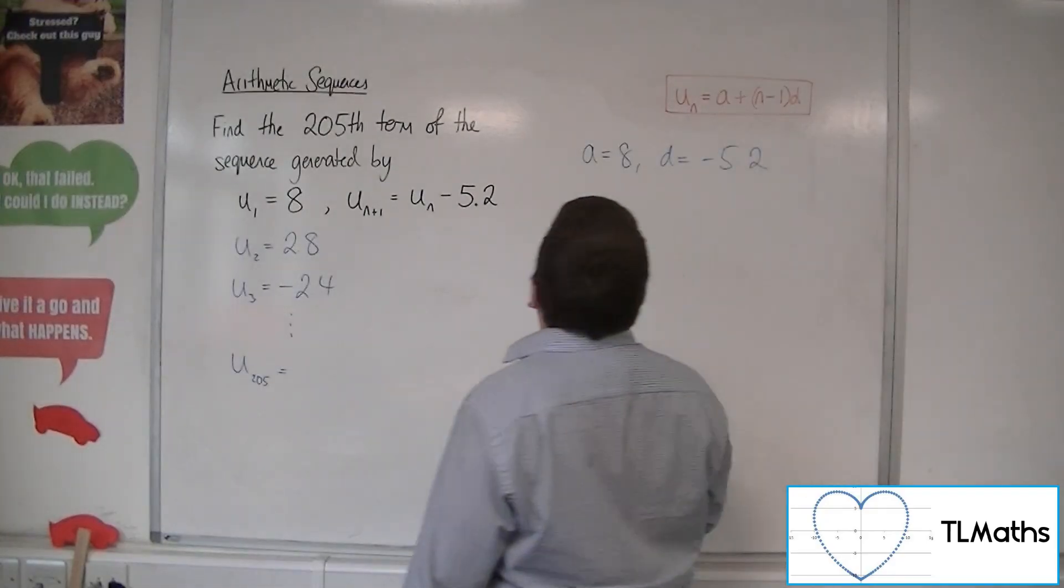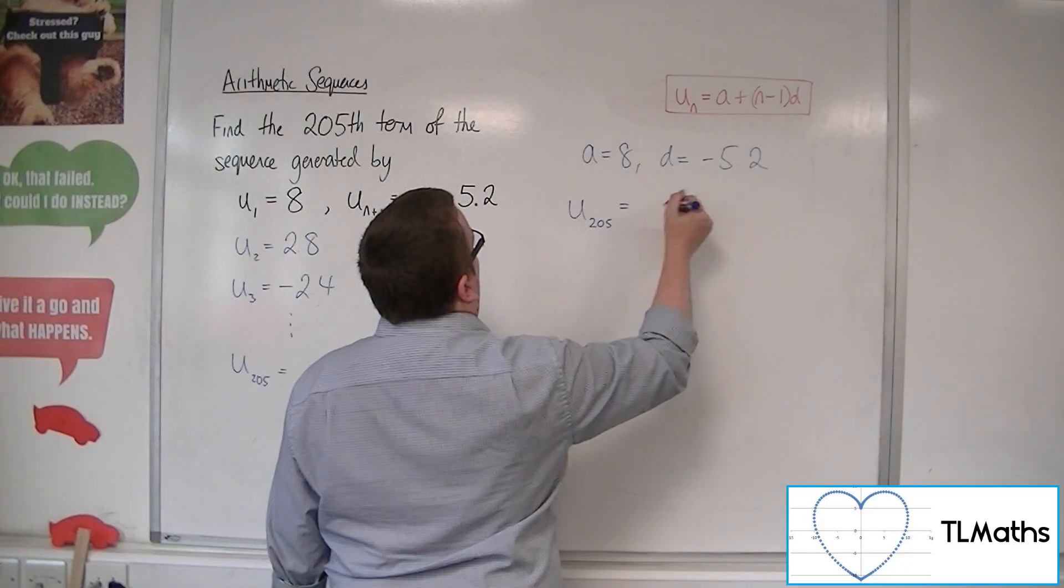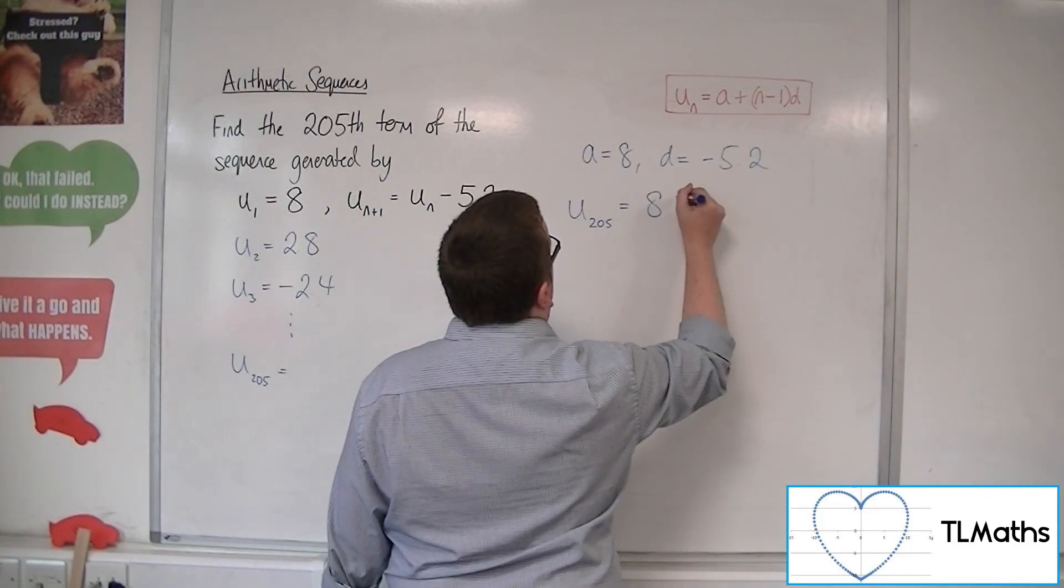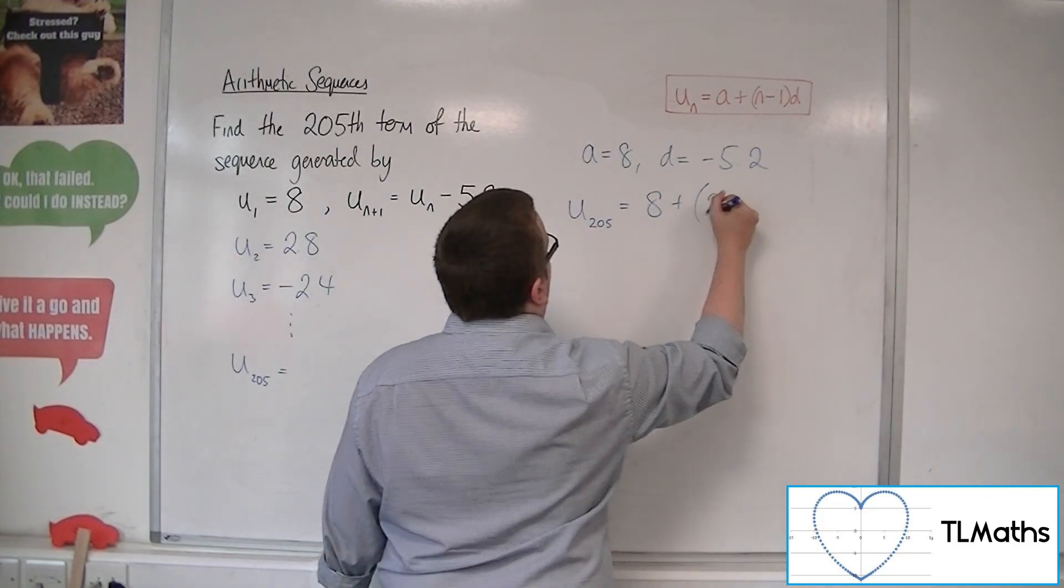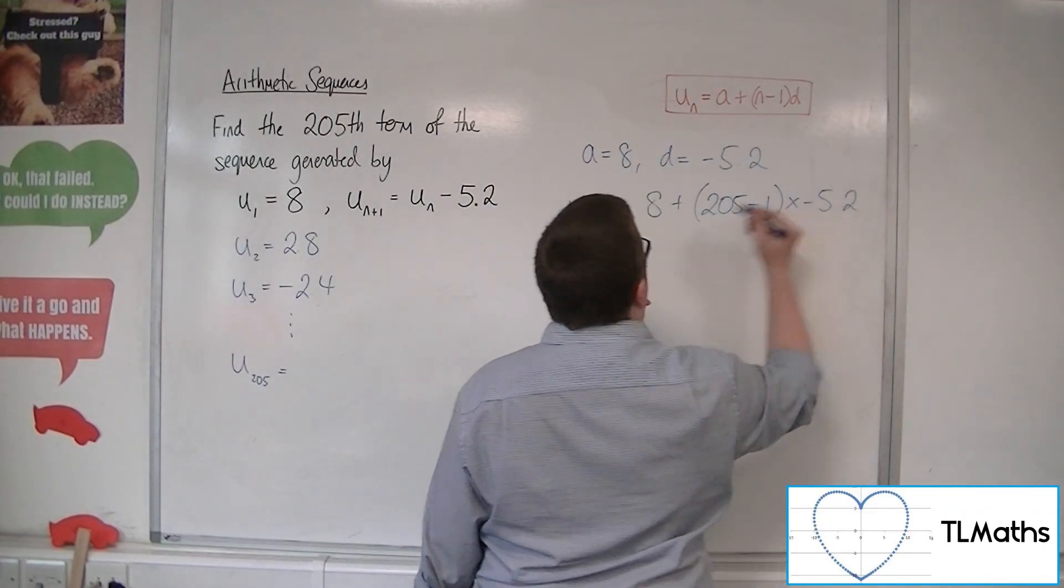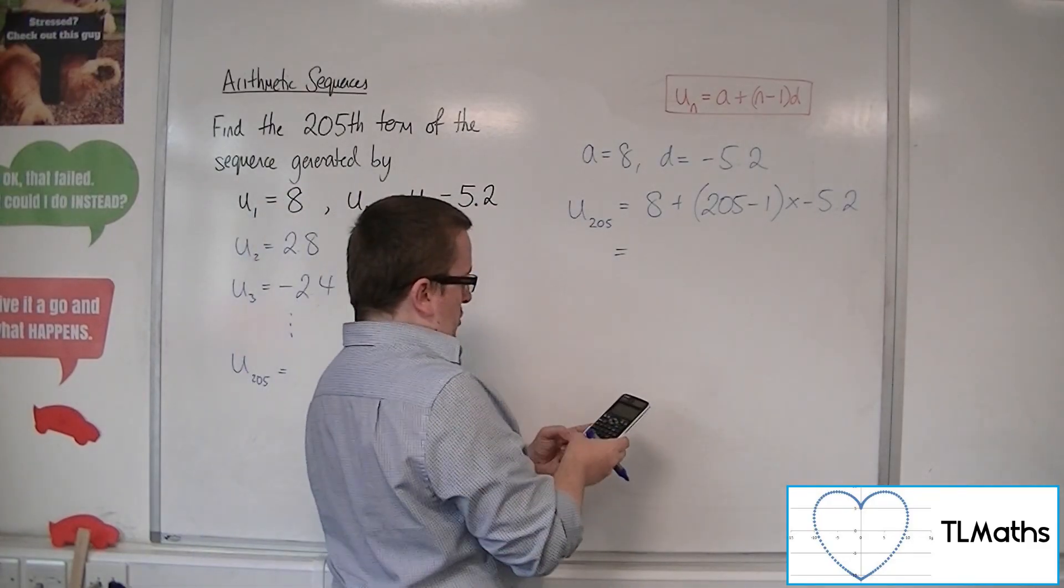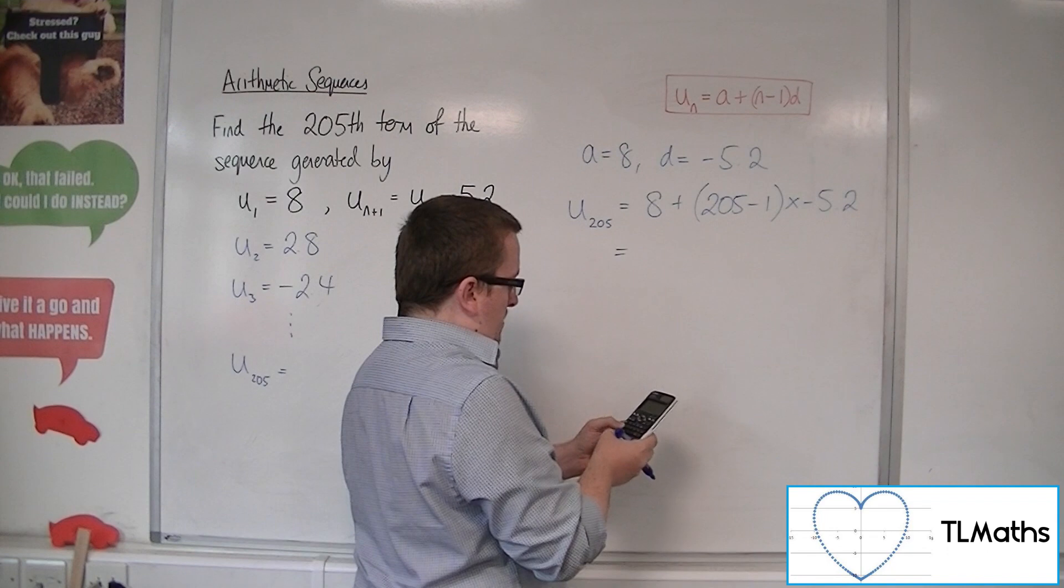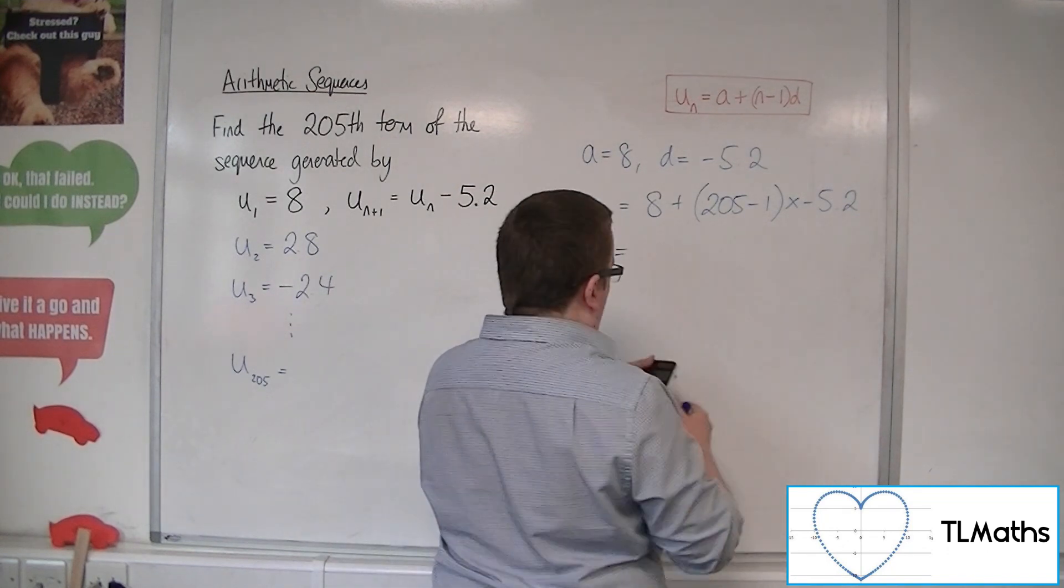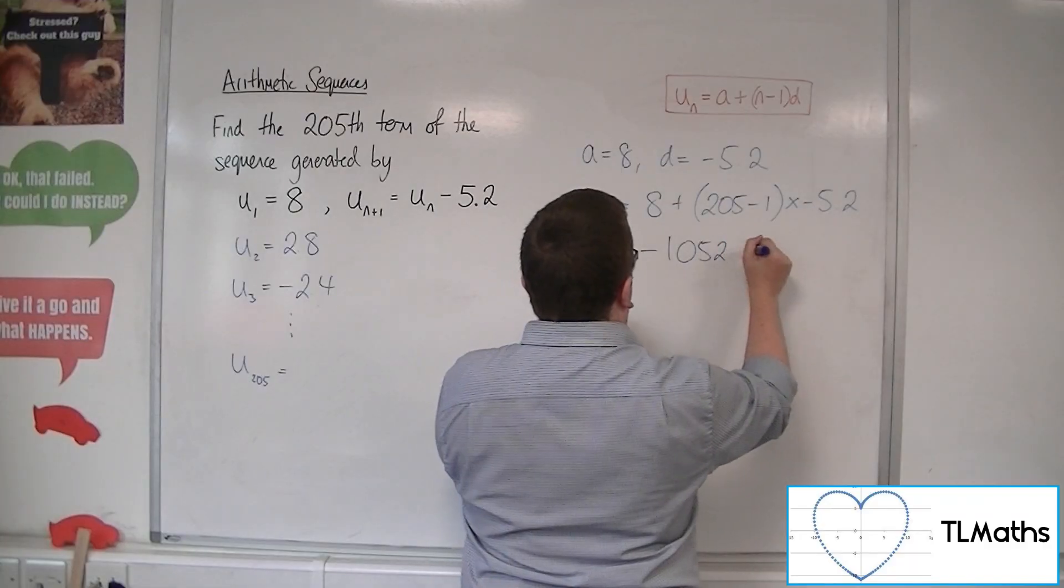I need to find the 205th term. So U205 will be A, the first term, plus 205 take away 1 times by the common difference minus 5.2. So 8 plus 204 times minus 5.2, which is minus 1052.8.